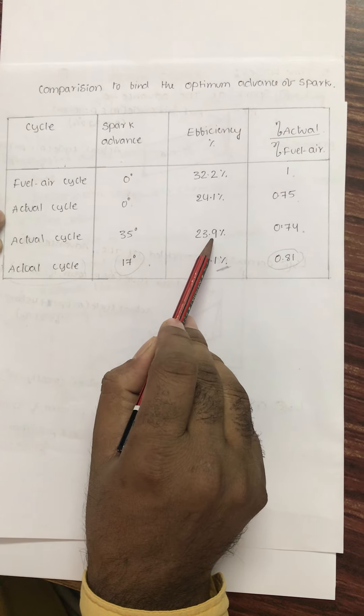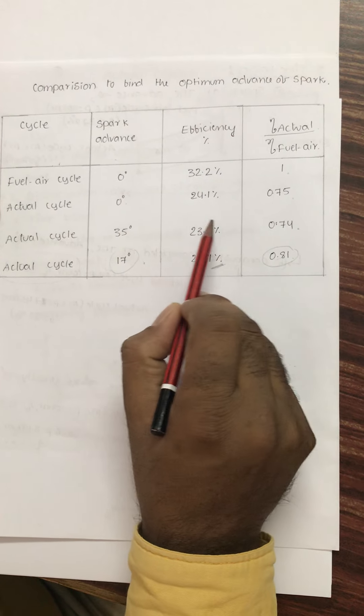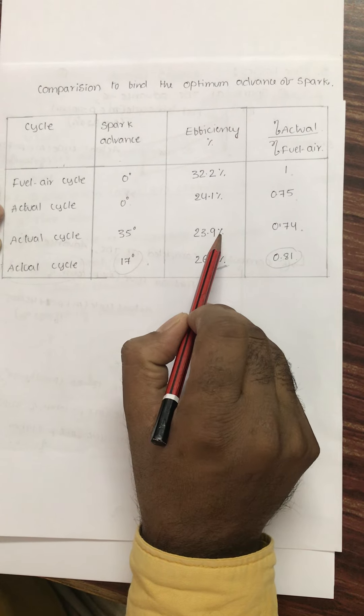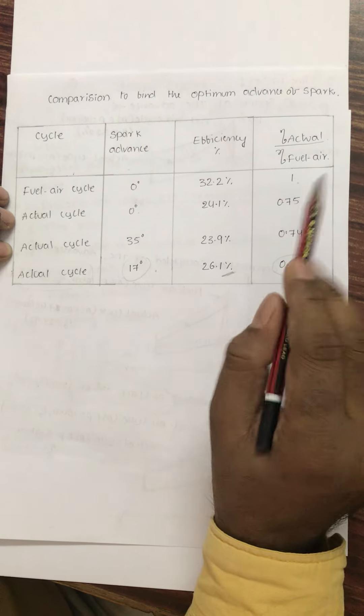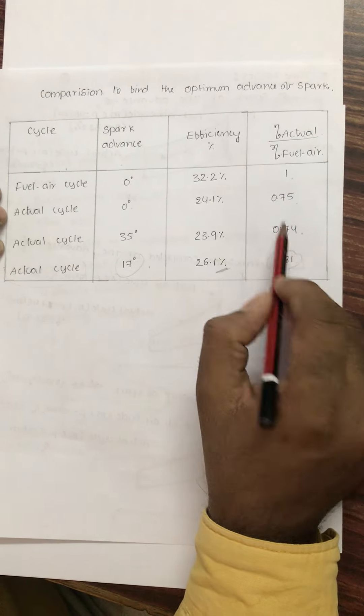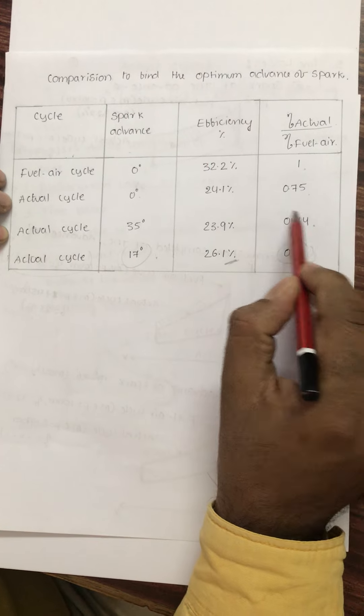This happened because of compressing the burning gas, so that means work input is increased. Work input increases; even though work output increases, the efficiency is reduced because the net work output is reduced. This ratio becomes 0.74, it is reduced.